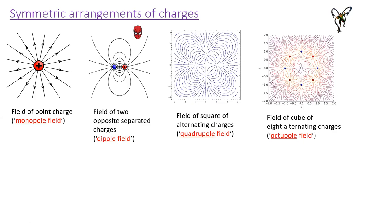We can go even further. This is actually a top view of a cube of charges, with positive charges shown in red and negative charges in blue, viewed from above. That's called an octopole field, and just to maintain the theme, I've got Dr. Octopus up in the corner.